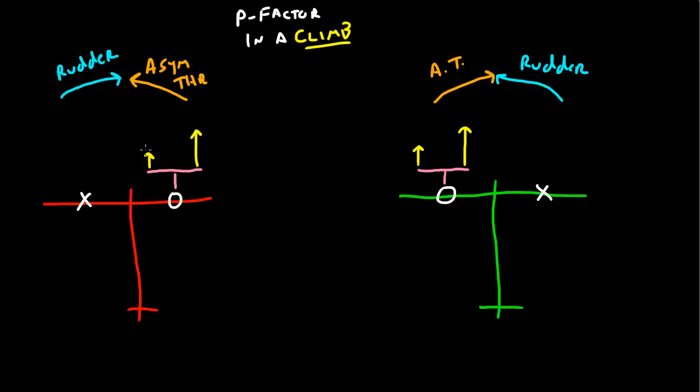Now, we have more thrust being generated over here, and we have less thrust being generated right here. What's the effect? Well, the effect is that the center of thrust, that is to say, the average thrust between all points on the propeller, moves not to the centerline but slightly off to the side of the centerline. So, you've got the centerline of thrust right about there, and you've got the centerline of thrust right about there.